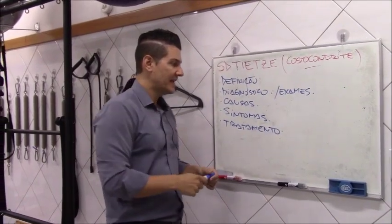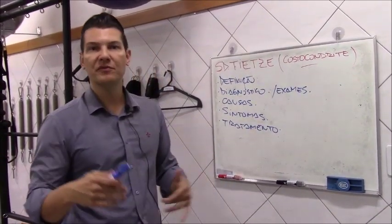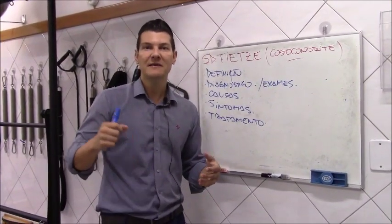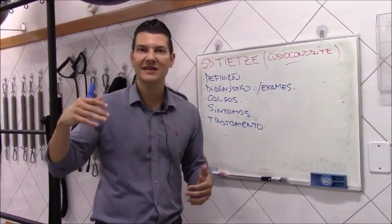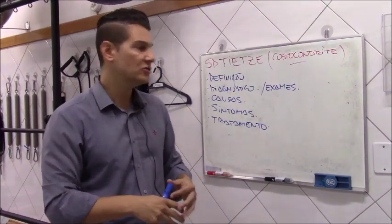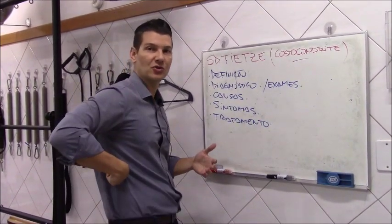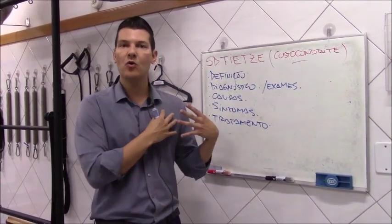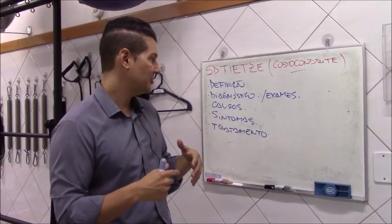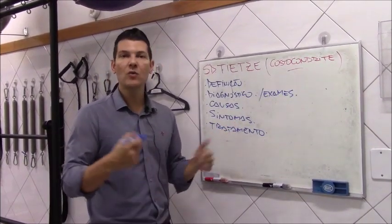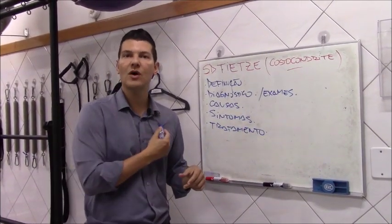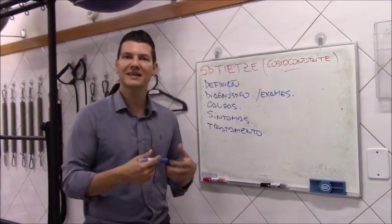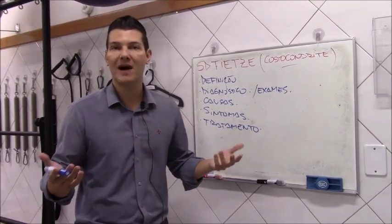Esses sintomas podem cursar por fases, passando inicialmente por uma fase aguda, onde o paciente vai ter um pico de intensidade da dor, podendo irradiar para a região das costas, para toda a região do peito — central, um pouco mais à direita ou à esquerda — de acordo com a região acometida. Em geral, é unilateral, acometendo um lado ou o outro. É raro encontrar sintomas bilaterais, exceto em casos traumáticos.